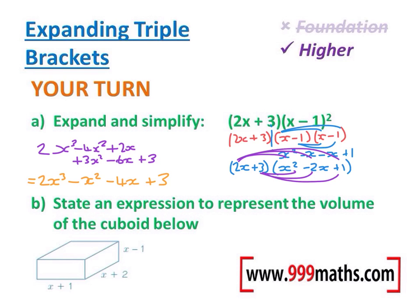OK, have a go at question B. And again, pause before you see the answer. OK, here it goes. Well, the volume of a cuboid is length times width times height. And we have those dimensions all given in algebra, so we need to multiply those together. So let's first set that up.